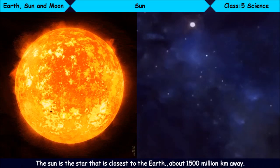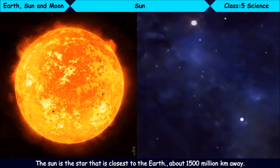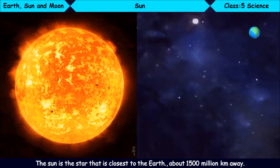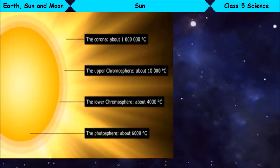Sun. The Sun is the star that is closest to the Earth, about 1,500 million km away. It is a huge pool of hot, burning gases. The Sun has a thin layer of atmosphere called the corona.